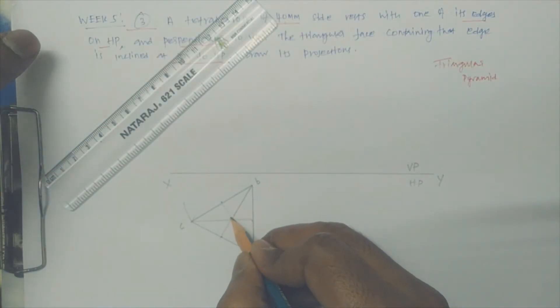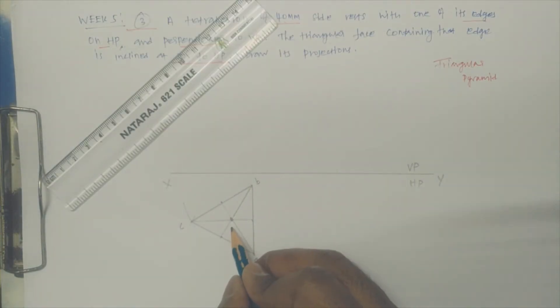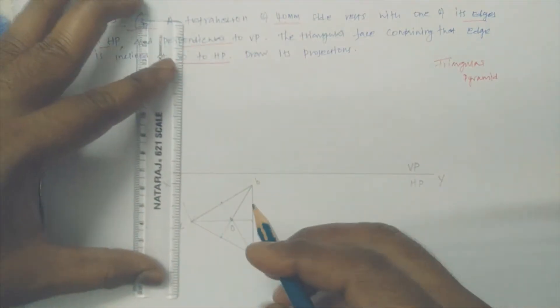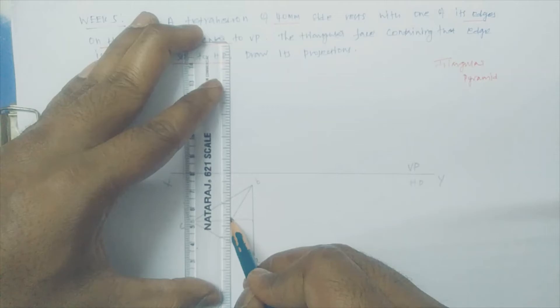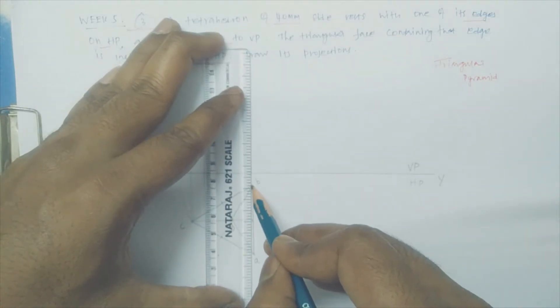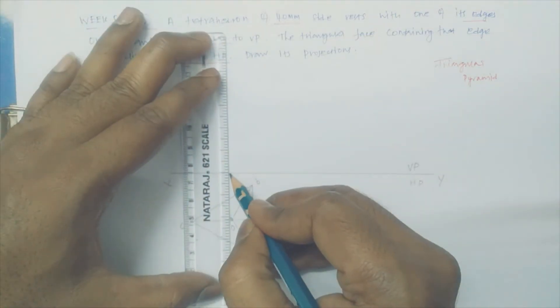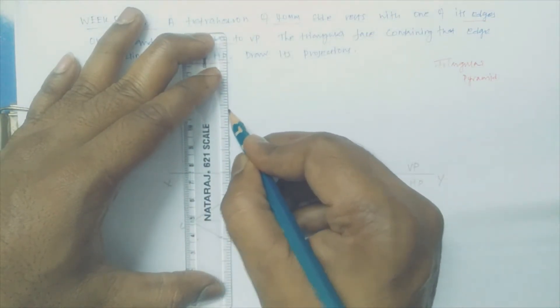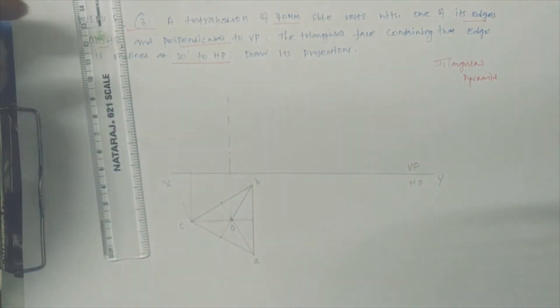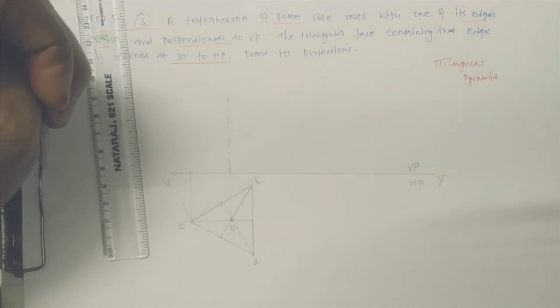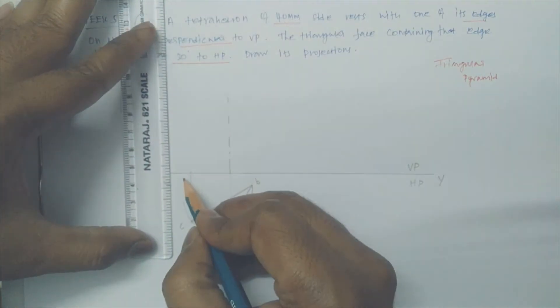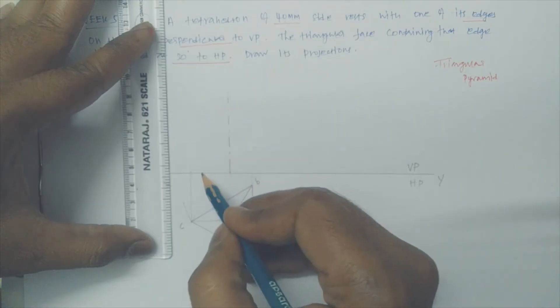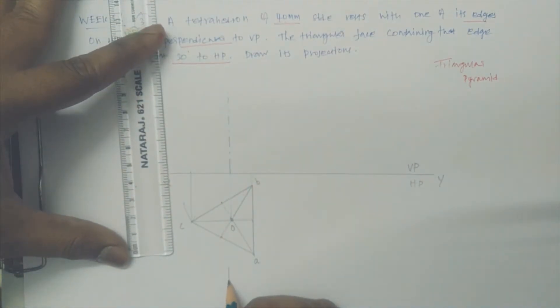I just mark the center of this strip, so that the edge is supposed to connect up to here. This is the center, that may be O. It's the CG of that particular point. Now we draw a vertical line to finish the simple position. Now we draw the axis.